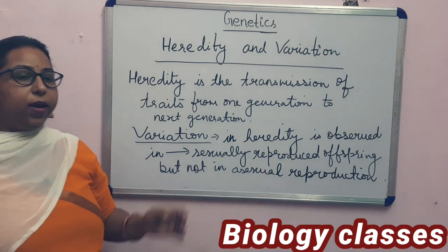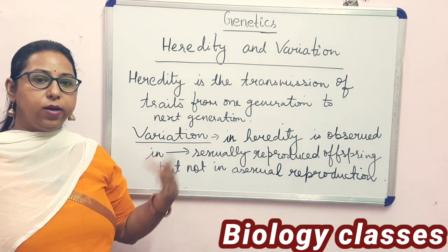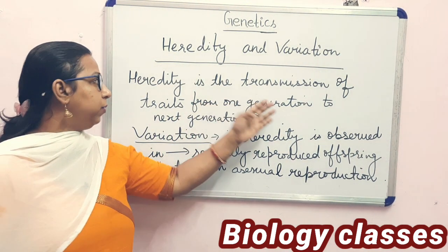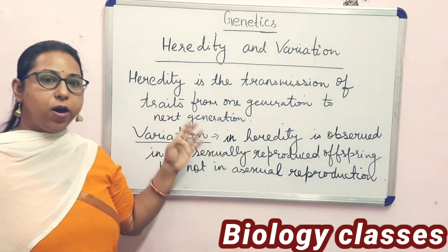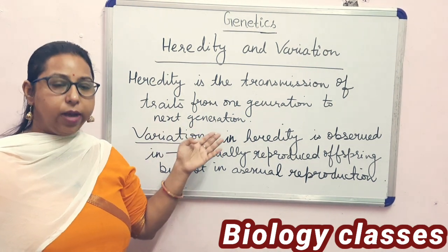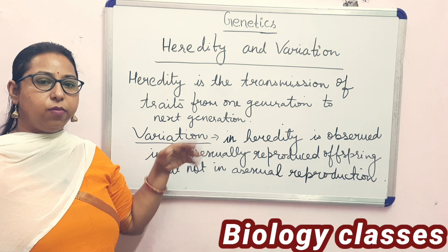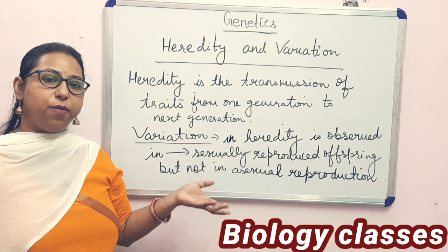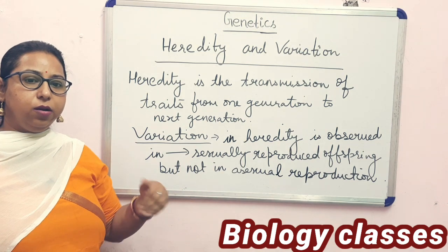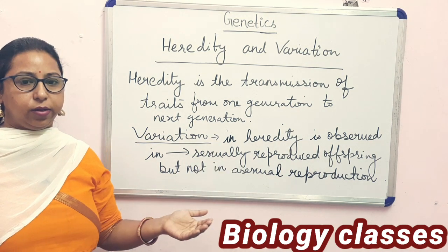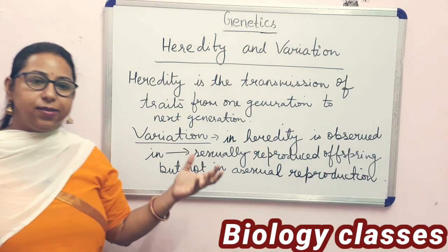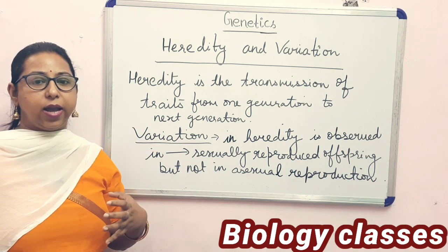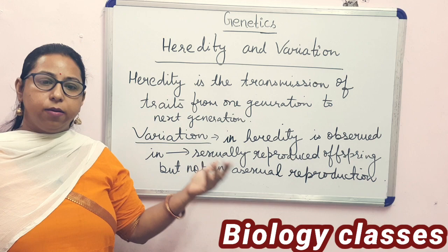Now, heredity and variation. Heredity is basically the transmission of traits from one generation to the next generation. Some genetic characters are passed from one generation to the next — it is a tendency on the part of the offspring to inherit the characters from the parent.